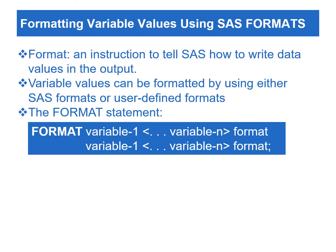A format is an instruction to tell SAS how to write data values. We can use formats to control the written appearance of data values in the output. Variable values can be formatted using either SAS formats or user-defined formats created from the FORMAT procedure. This section only covers SAS formats; PROC FORMAT is covered in Chapter 10. To associate formats with variables, we use the FORMAT statement. In the FORMAT statement, we associate a format with one or more variables listed before the specified format. If we associate a variable with a format in the data step, the format becomes permanent and becomes the variable's attribute. Like the LABEL statement, if we use a FORMAT statement in a proc step, the associated format is only available for the output of the current procedure.